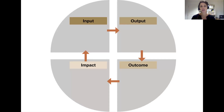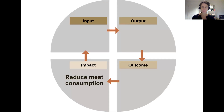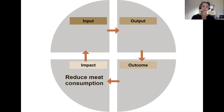We usually work with the IOOI model, so we think about the impact that we would like to achieve. In an easy example, say we would like to reduce meat consumption in Switzerland. Now it's clear that with a simple environmental education project you can't really get people to stop eating meat altogether. There are many different factors that influence how much meat we consume, and in Switzerland that's around one kilogram per week, so it's quite a lot. So what we can do is contribute to a reduced meat consumption using some of our projects.